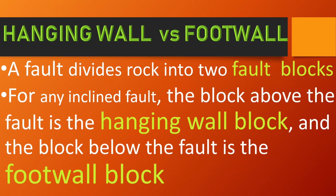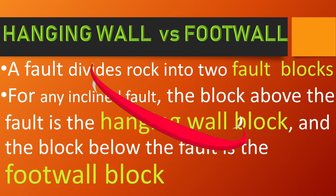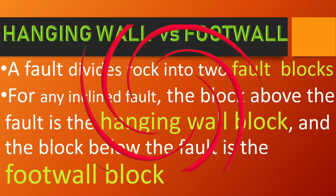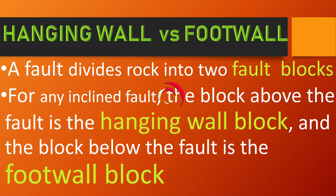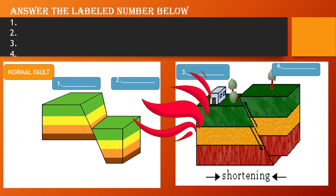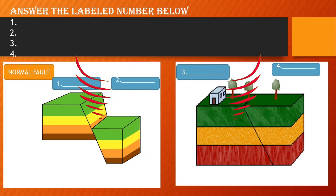Hanging wall versus foot wall. A fault divides rock into two fault blocks. For any inclined fault, the block above the fault is the hanging wall. Tandaan mga bata, ang hanging wall ay nasa taas ng block at ang foot wall ay nasa baba. Before we continue to our topic, please try to answer the four questions above.